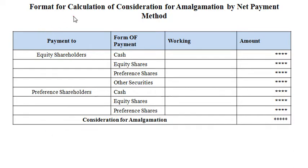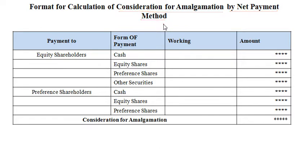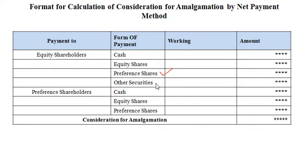First of all, we calculate consideration for amalgamation by the net payment method, which is given by the transferee company to the transferror company. This includes consideration given to equity shareholders of the transferror company in the form of cash, equity shares of the transferee company, preference shares of the transferee company, and other securities of the transferee company.